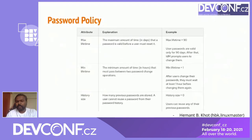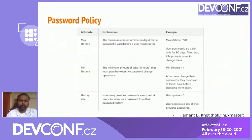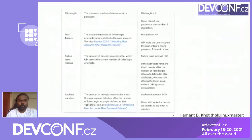Password policy is one of the important features of FreeIPA. You can define maximum and minimum password lifetime, history size, character class complexity — uppercase, lowercase — and minimum password length. You can also set maximum failure attempts and a failure reset interval. For example, if your account gets locked after three failed attempts, the password will reset after a specified time duration, and you can also set a lockout duration.